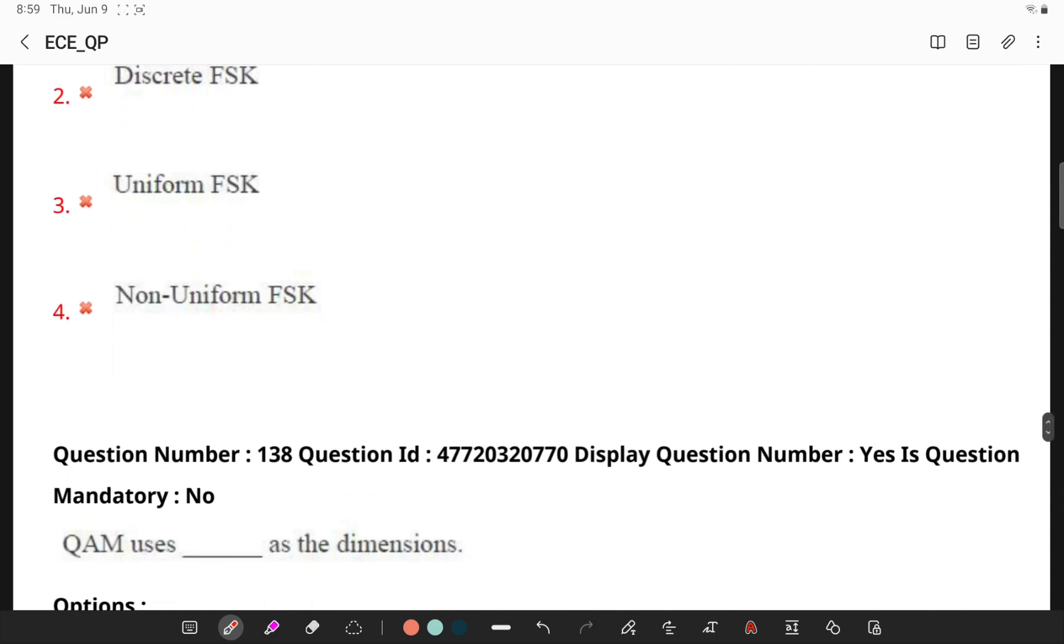QAM uses which type as dimensions? Quadrature amplitude modulation is a signal in which two carriers are shifted in phase by 90 degrees - sine and cosine, which are modulated and then combined.